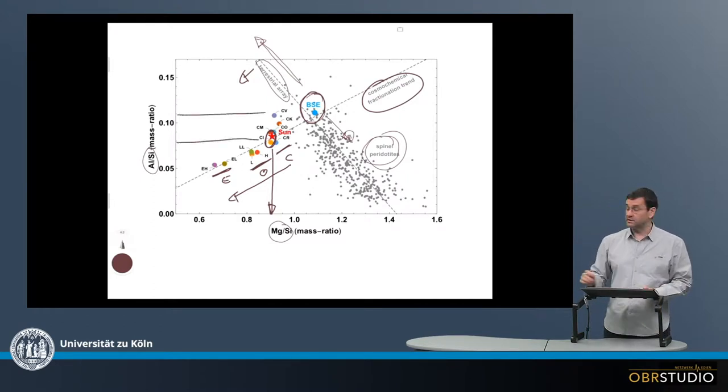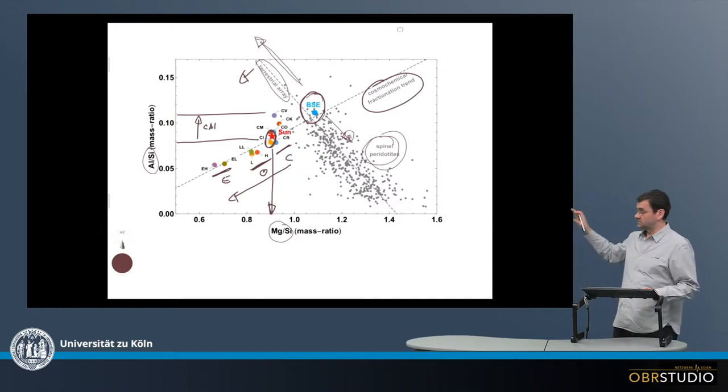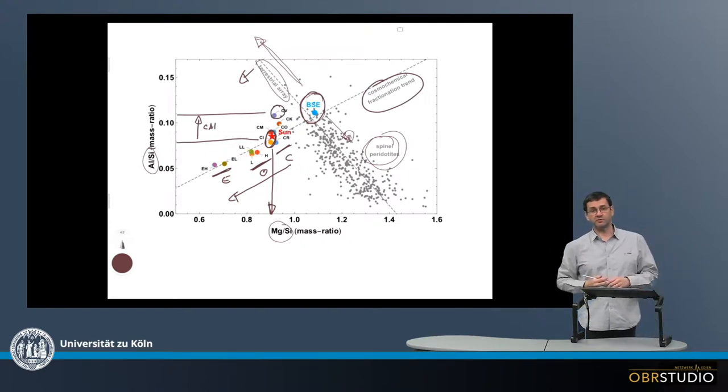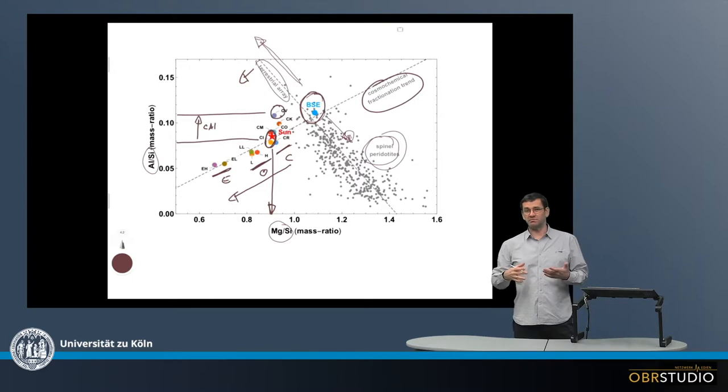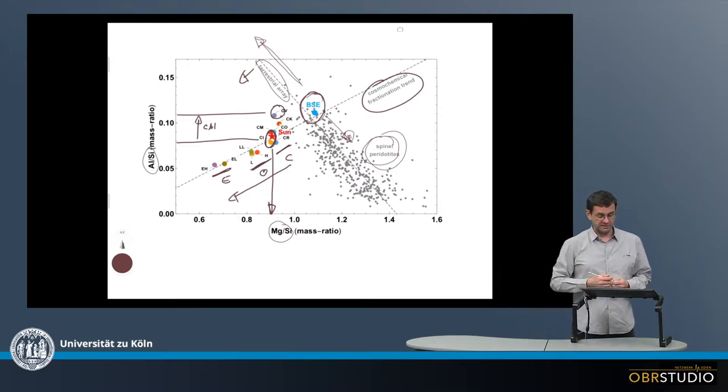On the other hand, they have quite a range in the aluminum-silicon ratio. And this is most likely due to the addition of calcium-aluminum-rich inclusions, which in fact correlates with that CV chondrites have the highest amount of CAIs, with about three, maybe four volume percent of CAIs.